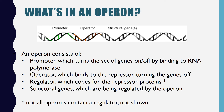The first part of the operon is the promoter region. It's a stretch of DNA that binds to RNA polymerase. If RNA polymerase binds, then the genes in the operon will be transcribed. If RNA polymerase can't bind, then the genes will not be transcribed.